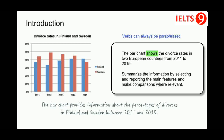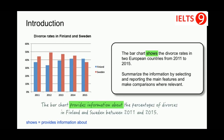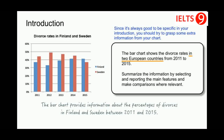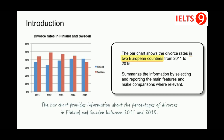I kept 'bar chart'. The verb 'shows' was replaced by 'provides information about'. We could also use synonyms such as 'represents' or 'illustrates'. Instead of 'divorce rates', I used 'percentages of divorces'. The phrase 'in two European countries' was replaced by the specific country names Finland and Sweden, since it's always good to be specific in your introduction. The time period was paraphrased from 'from 2011 to 2015' to 'between 2011 and 2015'.